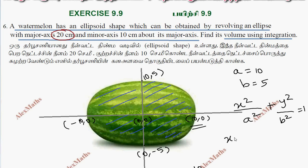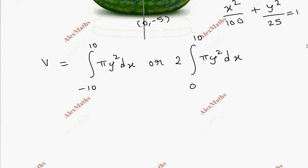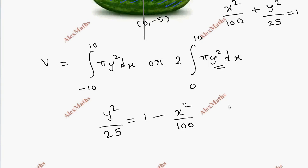So x²/100 plus y²/25 equals 1. Solving for y²: y²/25 equals 1 minus x²/100. Therefore y² equals 25 times (1 minus x²/100), which simplifies to (100 minus x²) divided by 4.